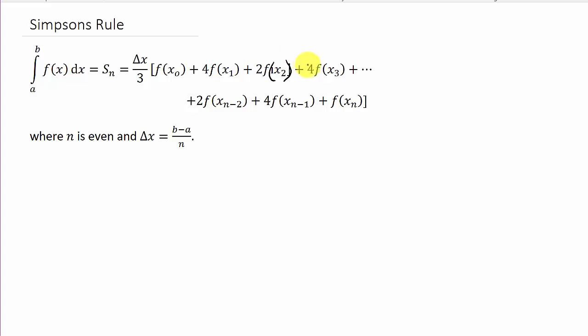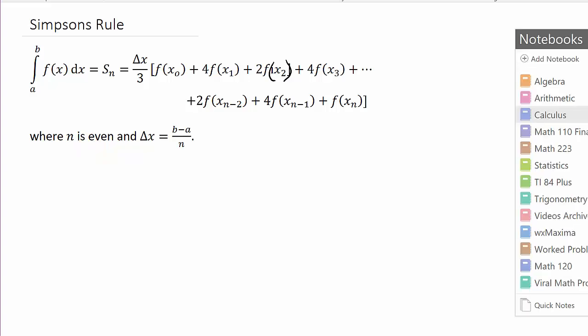Then a 2, and then it alternates 4, 2, 4, 2. And Δx is (b-a)/n. Alright, so let's go ahead and look at our example. But before we do, the important thing here, n has to be even. N has to be even in order to use Simpson's Rule.